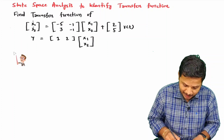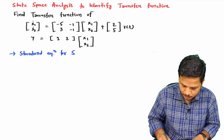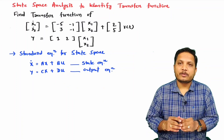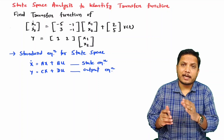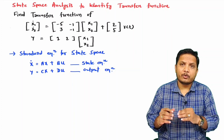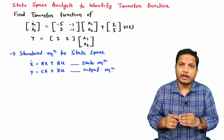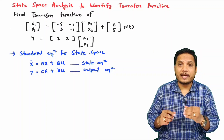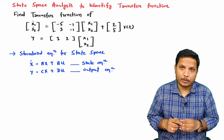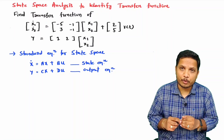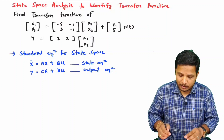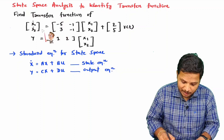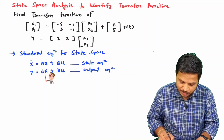So let me write the standard reference equations first. There are two standard equations: one is the state equation, x-dot equals Ax plus Bu, and the second is the output equation, y equals Cx plus Du. Here y is our output, u is our input, and A, B, C, D are the matrices which we need to identify by comparing with the two given equations.